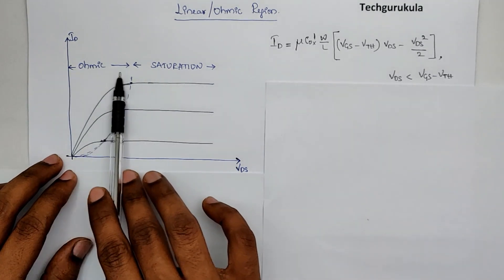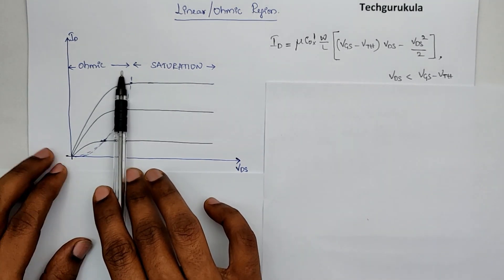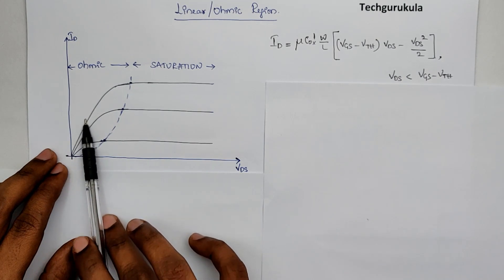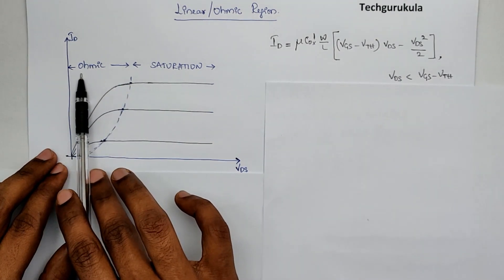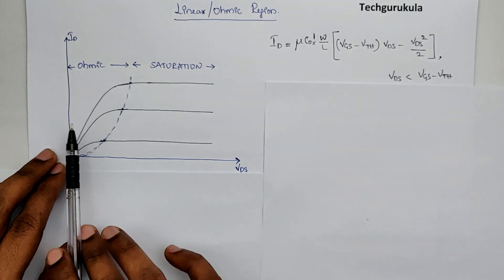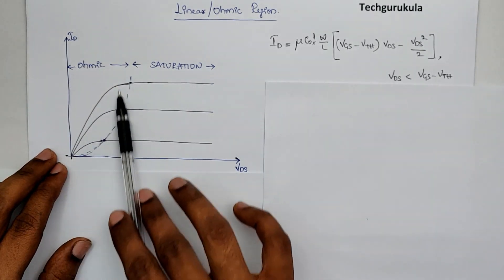And we have defined this as a linear region. In fact, to be very specific, this is not really linear. We, in fact, choose to call this ohmic region in most of the cases. We're going to talk specifically about this region.